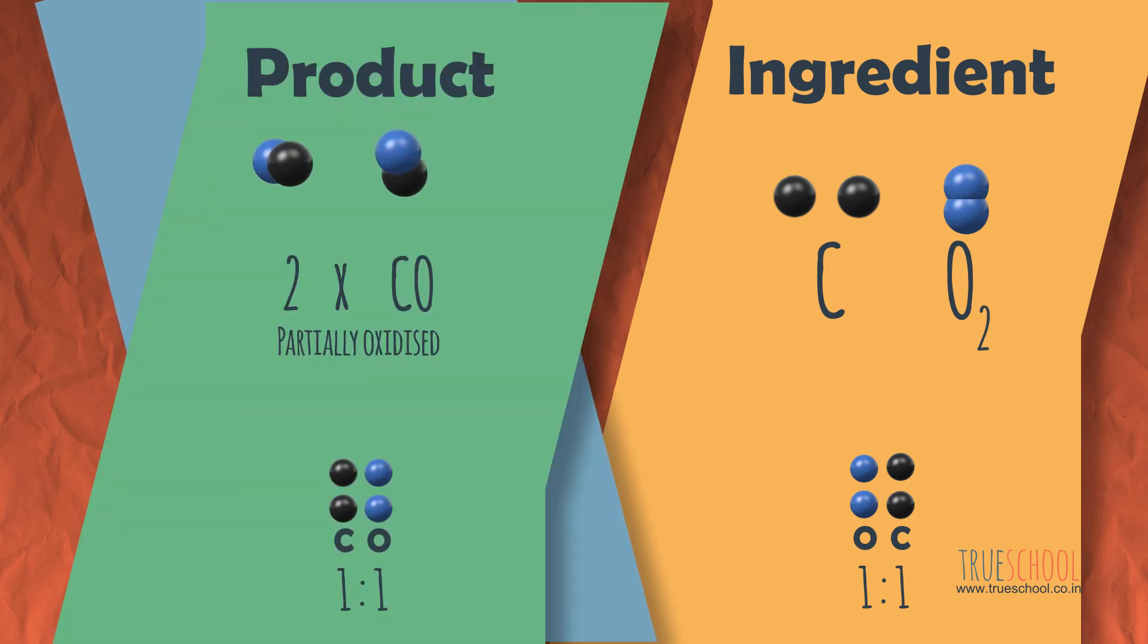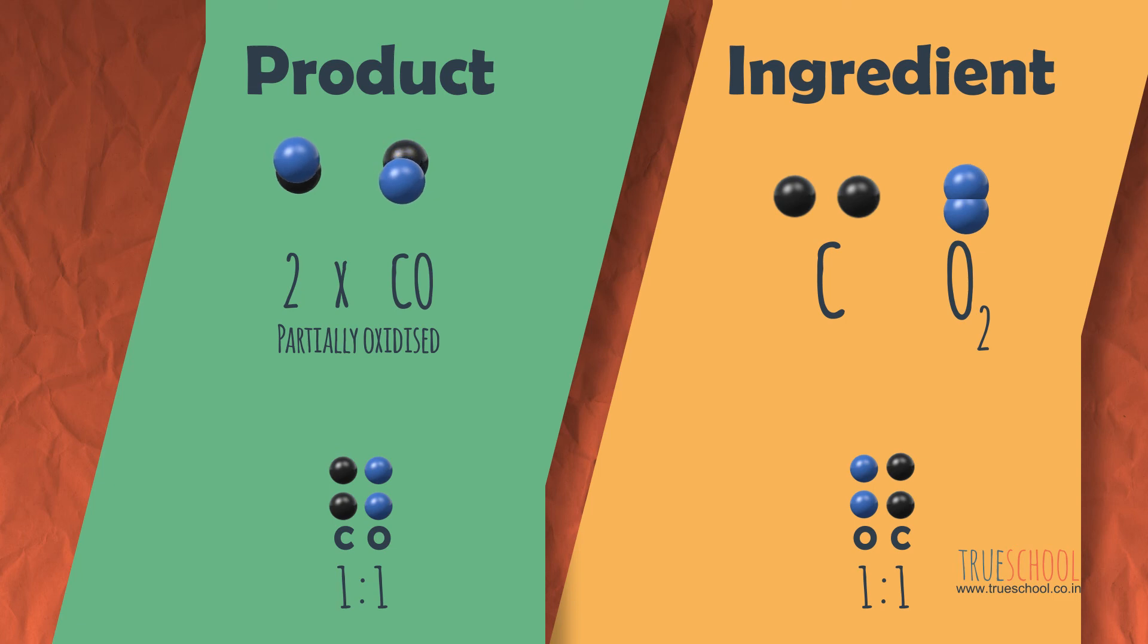So in this case, two CO molecules will be formed. But remember, this is a rare case, and mostly molecules only react in a fixed proportion. This simple principle of reactants reacting in a fixed proportion is called stoichiometry. Let's solve some problems now.